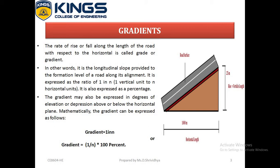For example, from the picture, the horizontal distance is 1000 meters and the vertical distance is 25 meters. From the definition, we can write 25 is to 1000. By applying the gradient formula, we get 1 is to 40, or we can write it as 1 in 40.